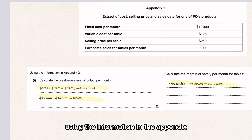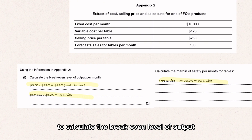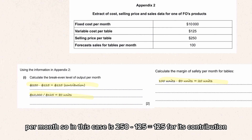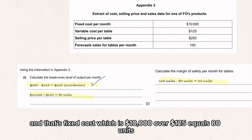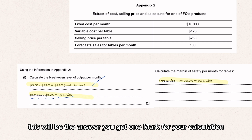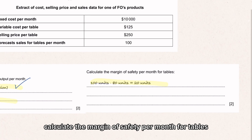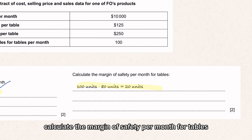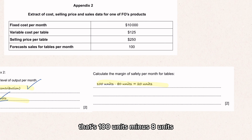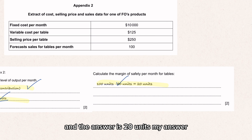Using the information in Appendix 2, calculate the breakeven level of output per month. The contribution is $250 minus $125 equals $125. Breakeven is fixed cost $10,000 divided by $125 equals 80 units. You get one mark for your calculation and one mark for the correct answer. Calculate the margin of safety per month for tables: 100 units minus 80 units equals 20 units.